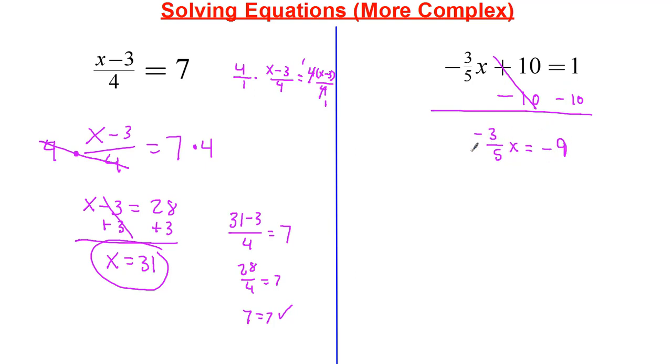Now this is multiplication. I have to divide. So in order to divide a fraction, I have to multiply by its reciprocal. So 5 over 3 multiplied by negative 5 over 3. We get rid of that.